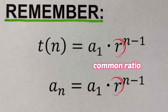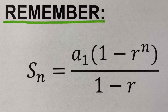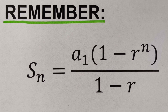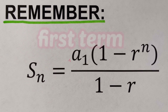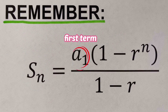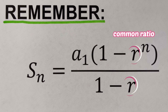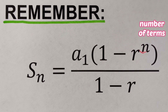Our r is the common ratio. The second formula is used to determine the sum of the first n terms of a geometric series. This is represented as: S sub n = a sub 1 × (1 − r^n) / (1 − r), where S sub n is the sum of the first n terms, a sub 1 is the first term, r is the common ratio, and n is the number of terms.